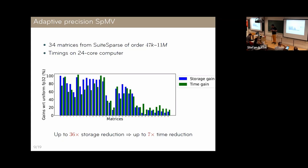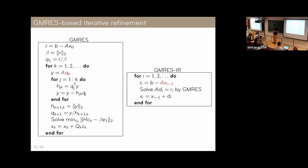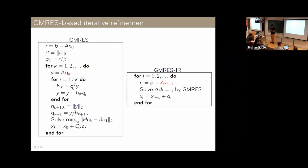The idea now is to plug this adaptive-precision SpMV within an iterative solver. We use GMRES-based iterative refinement — though it could be any iterative solver. At each outer iteration we solve an inner correction system using GMRES. There are two SpMVs in the algorithm: one in the inner GMRES iterations and one in the outer iterations to compute the residual. This framework also allows us to use lower precision for the inner SpMV.